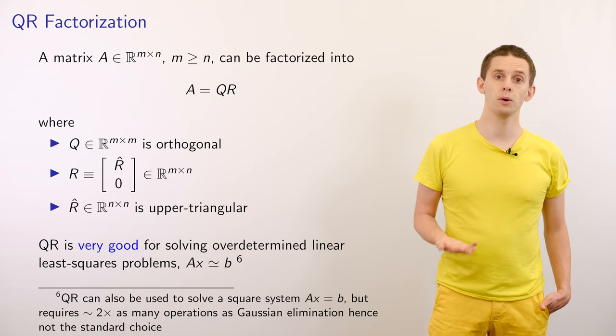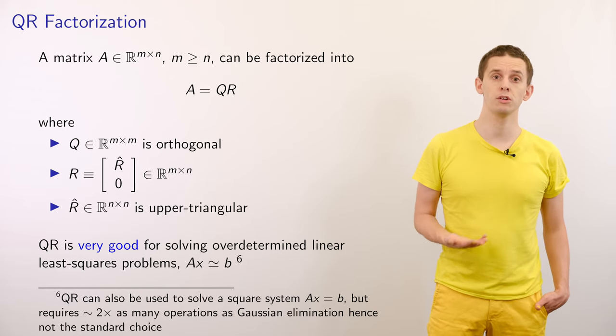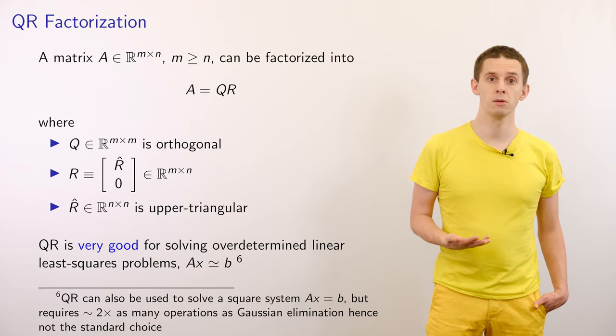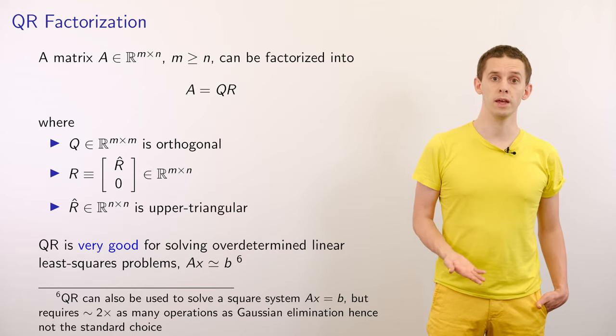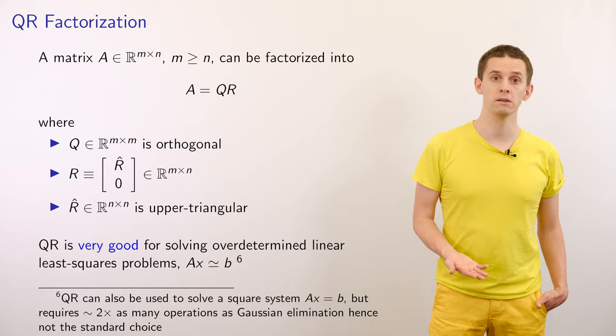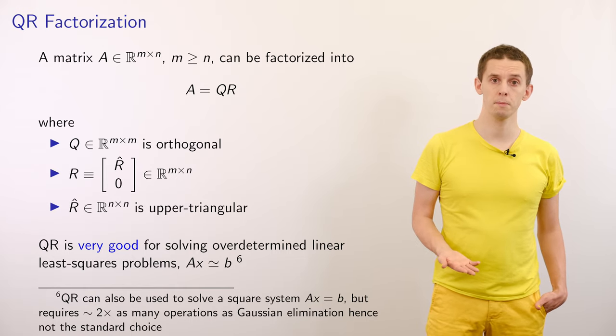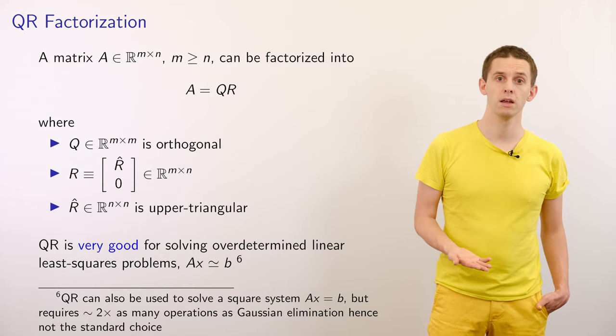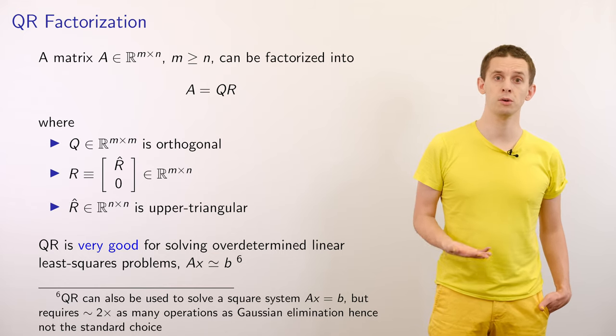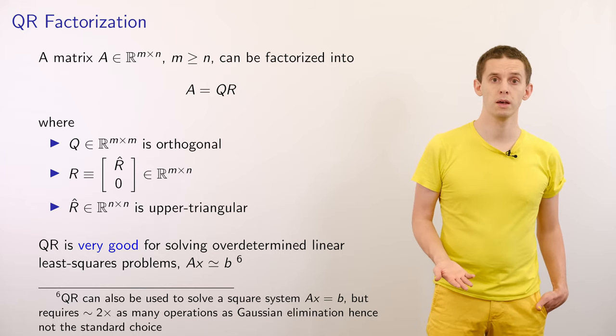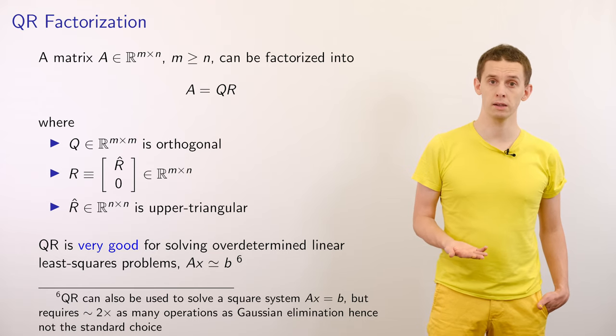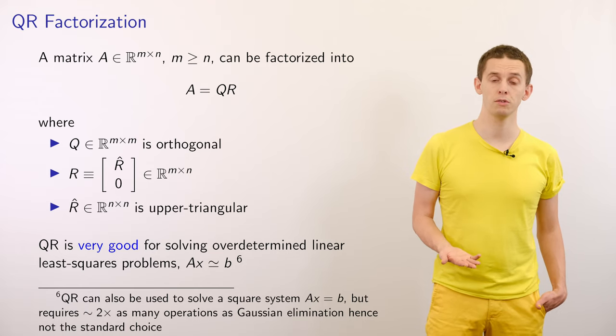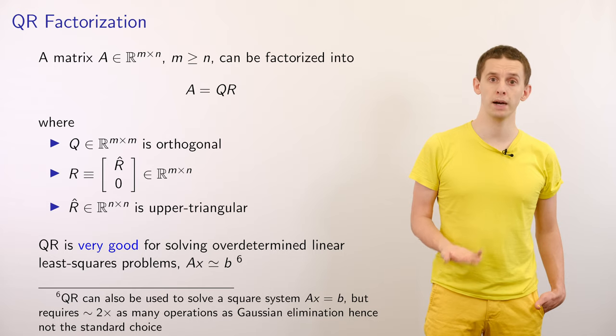We can use the QR factorization to solve linear systems. Suppose that we have a linear system Ax equal to B, then we could write that QRX is equal to B. We could apply Q transpose to both sides, and that would tell us that RX is equal to Q transpose B. We now have an upper triangular matrix system to solve, and we can solve that using back substitution as we saw for the LU factorization.